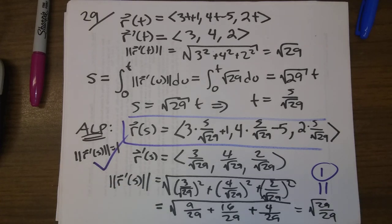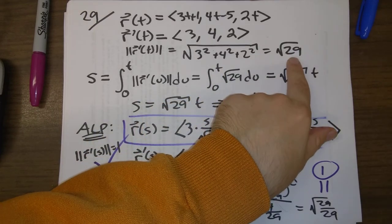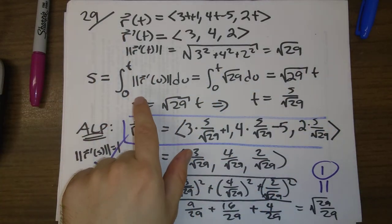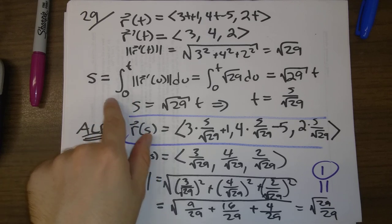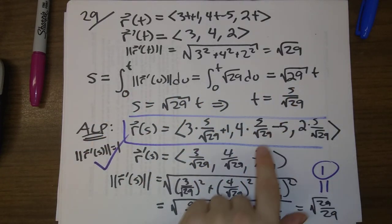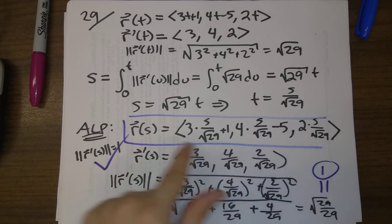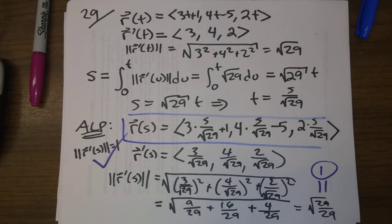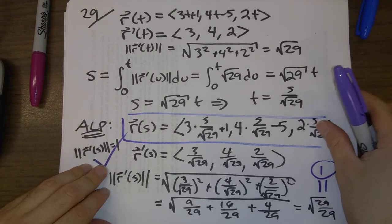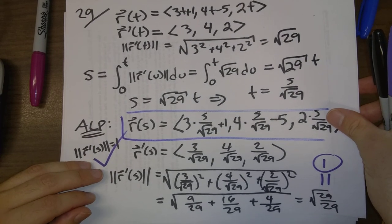This is an arc-length parametrization, and it's always good to check our work. To summarize: find the speed of your original parametrization, write out the arc-length integral, get s in terms of t, invert so t is in terms of s, then substitute back in. To check, make sure your speed equals 1. That's problem 29.